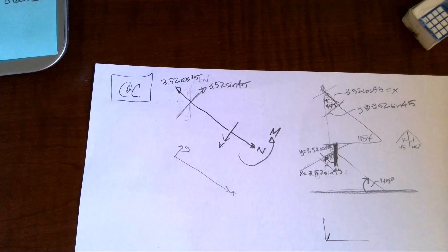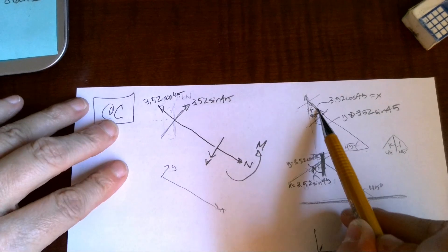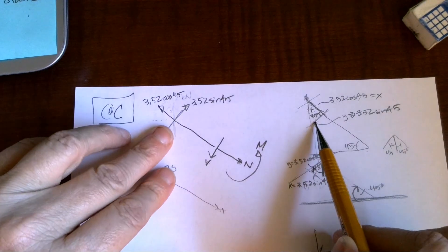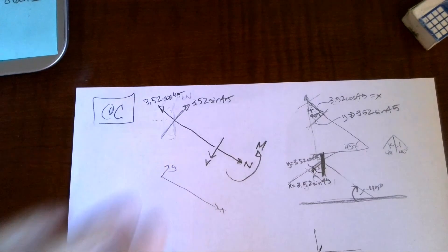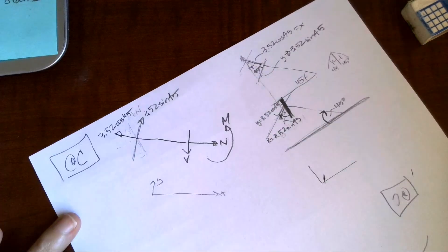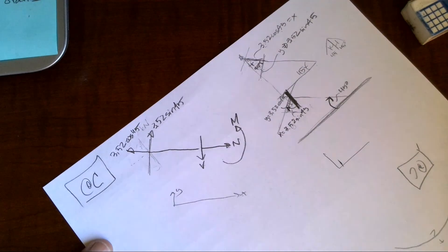We are using this method here, so my x component is 3.52 cosine 45, my y component is 3.52 sine 45. Now we're going to kind of turn our page because I like to have things looking normal to me and not sideways.